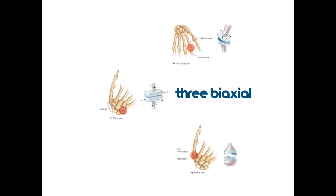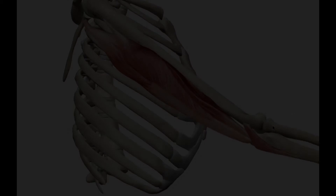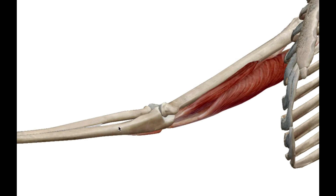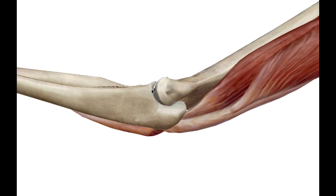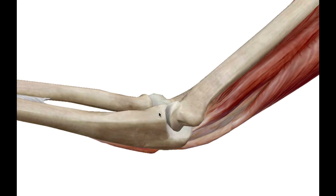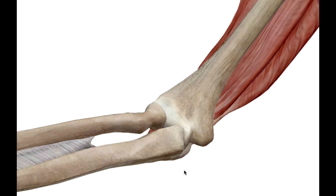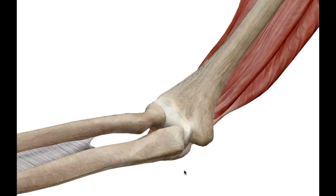That covers our three biaxial joints. Now let's move on to our last set — the mono-axial joints, which have the least range of motion. These are the hinge joint and the pivot joint. Looking at the hinge joint, we're looking at the bending of the elbow. Here's the humerus and here's the ulna — you can see the trochlear notch articulating with the trochlea of the humerus, and there's the olecranon process. That hinge movement is essentially all you can do — no lateral movement or sliding, just like a door hinge.